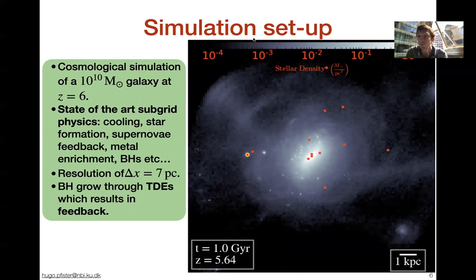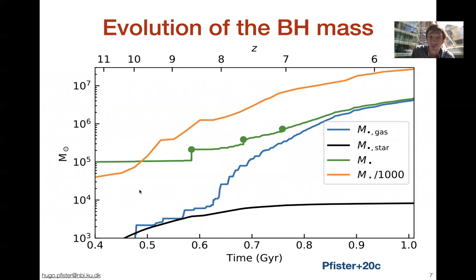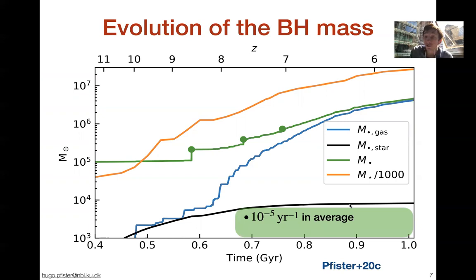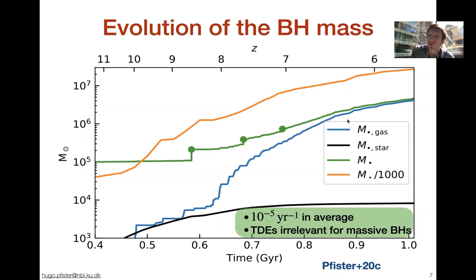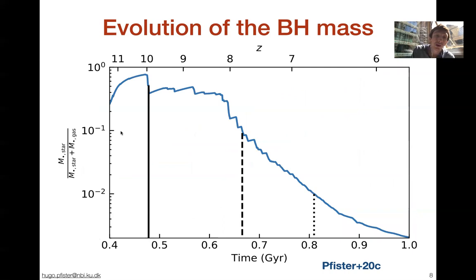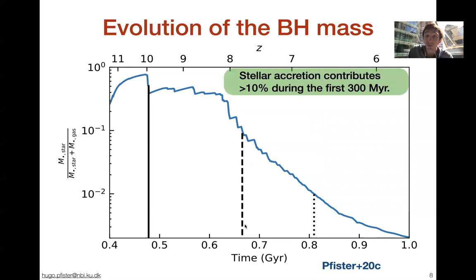You can see that many black holes have a high TDE rate. Looking at mass as a function of time: the orange line is the galaxy mass, the green line is the black hole mass, and the blue and black lines indicate the mass accreted by the black hole from gas and from stars respectively. The black hole accretes about 10 to the 4 solar masses in one gigayear, which is about 10 to the minus 5 solar masses per year — consistent with observations. When the black hole is massive, TDEs are completely irrelevant for growth, but in the early regime they may be important. The fraction of mass accreted through stars can be very high — more than 10 percent during the first 300 million years.